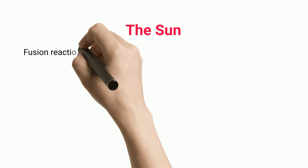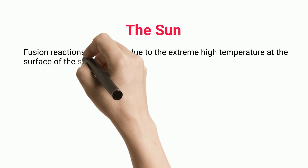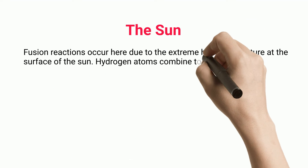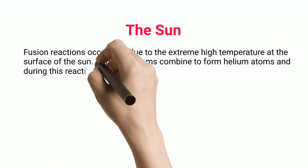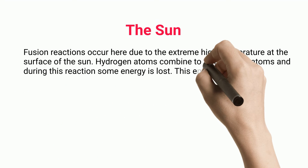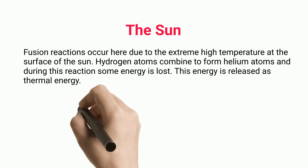Fusion reactions occur in the Sun due to the extremely high temperature at its surface. Hydrogen atoms combine to form helium atoms, and during this reaction some energy is lost. This energy is released as thermal energy.